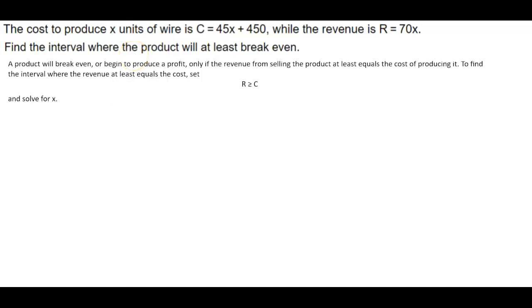So let's just go ahead and figure that out here. So we know that the revenue in order to break even is R, and then we know that at least equals is this symbol here. And then we know that it's got to equal or at least equal the cost of producing it. And there's our C.